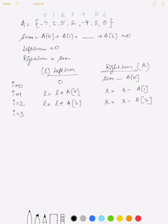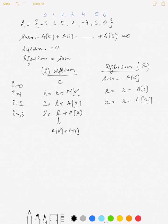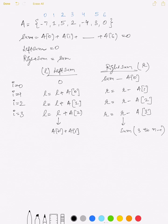Similarly, for i equal to 3, the left sum would be the previous left sum plus a[2]. The previous left sum was a[0] plus a[1], so adding a[2] gives the sum of elements from index 0 to 2. The right sum would be the previous right sum minus the element at index 3. The previous right sum was the sum of elements from index 3 to n-1; subtracting a[3] gives the sum of elements from index 4 to 6. This way we can determine if both sums are equal.